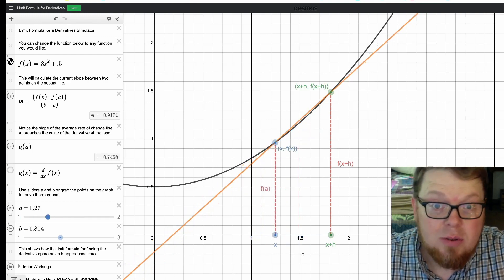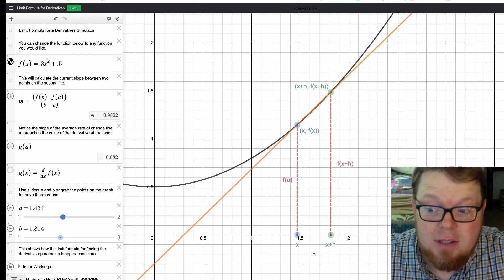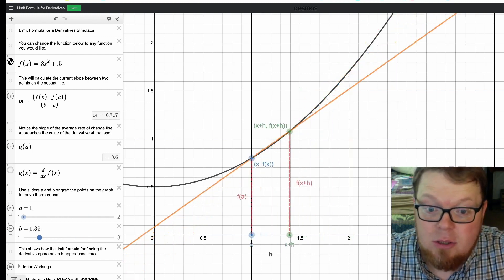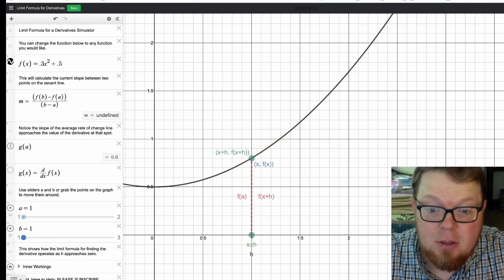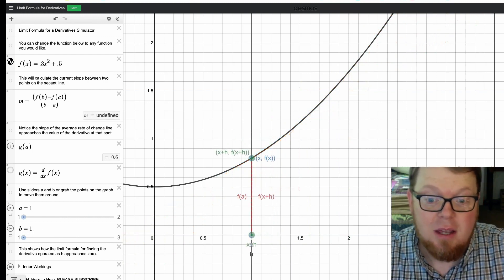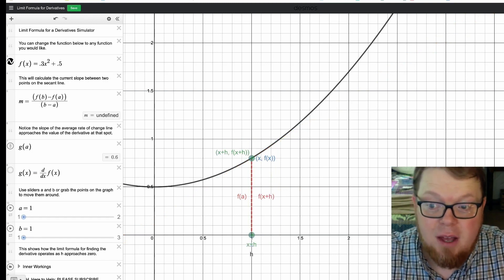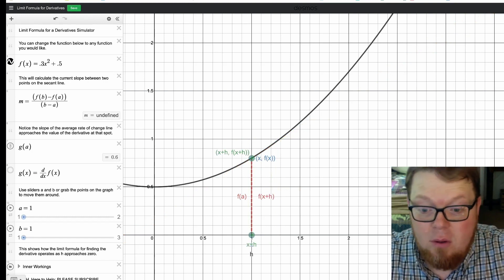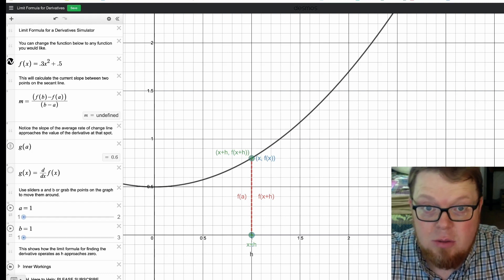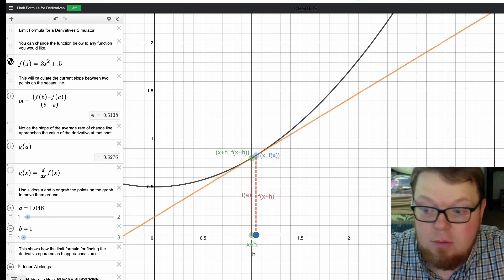You can also drag the sliders on the left side in either direction, and so it gives a lot of options for how you can get this to work, and students will automatically notice that the value is undefined when I put that all the way to H goes to zero, but what we really want to have is that H approaches zero, of course.